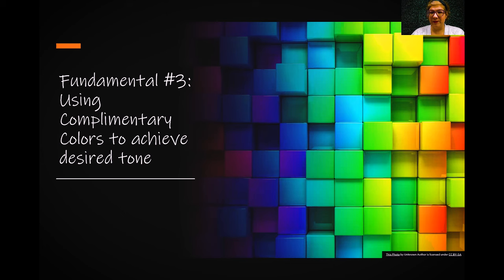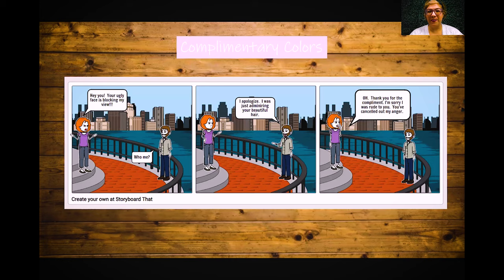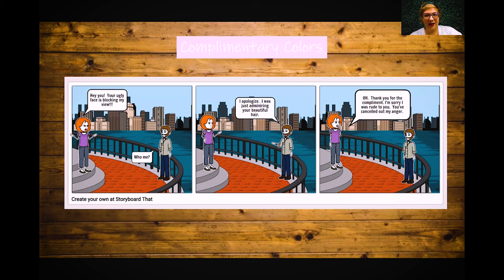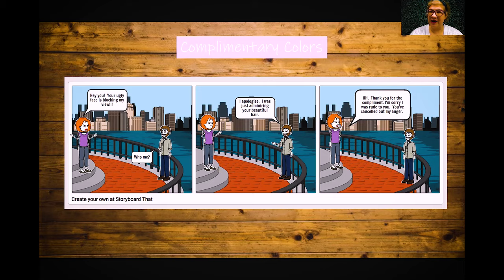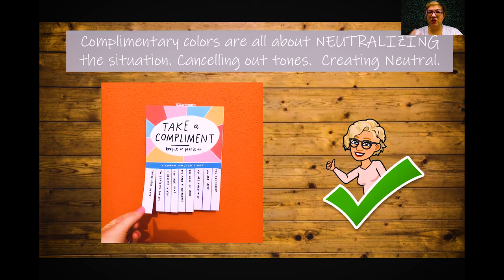Fundamental number three: understanding complementary colors. I explain complementary colors like this — if you're arguing with somebody and you compliment them, everything's going to simmer down and neutralize the situation. Same in color: when we use complementary colors we're trying to neutralize the situation, calming it down, making it not too hot or too cool. Complementary colors are about neutralizing, canceling out tones, and creating neutral.